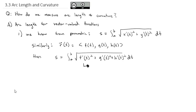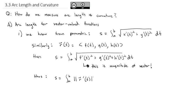We've seen that formula before — finding the square root of all the components squared is the formula for the magnitude of the vector. So instead, we can simplify our arc length formula to the integral from a to b of the magnitude of the derivative of the vector. That becomes our formula for arc length: we take the derivative of the vector, find its magnitude, and then integrate it over its range.